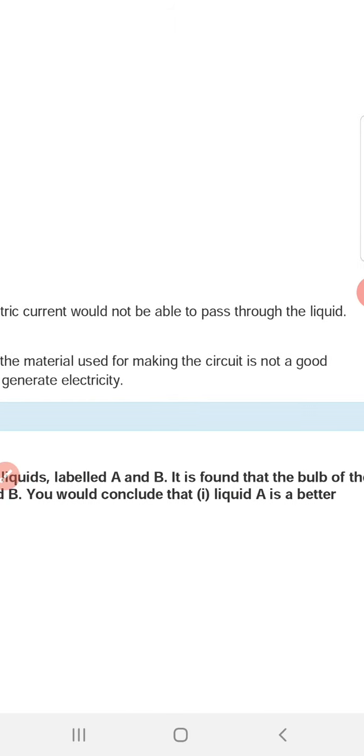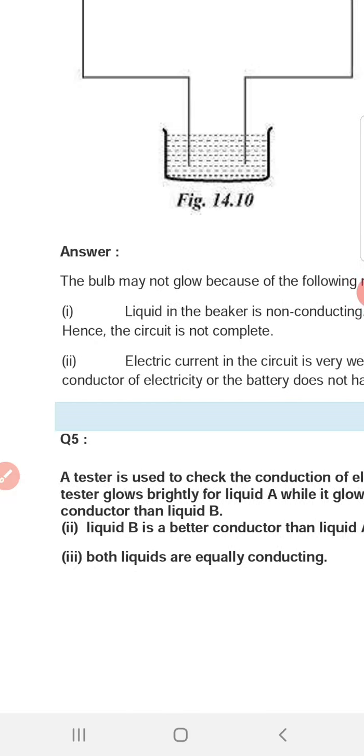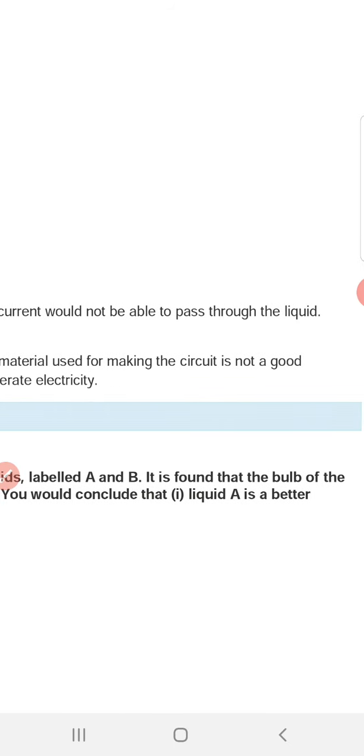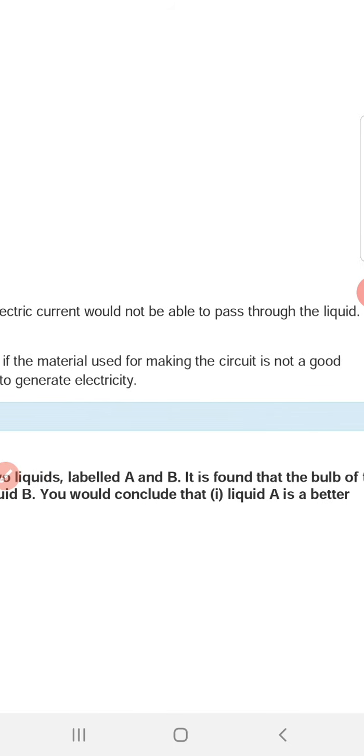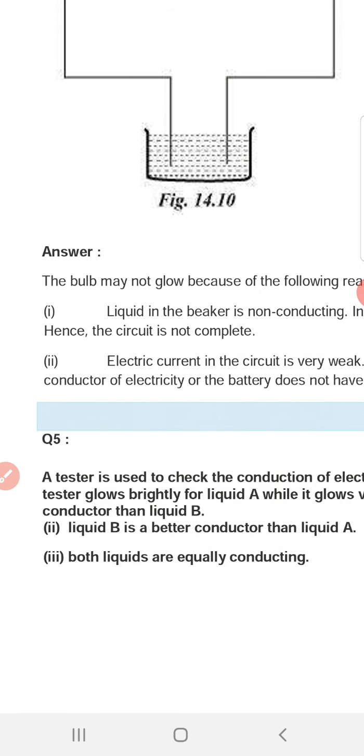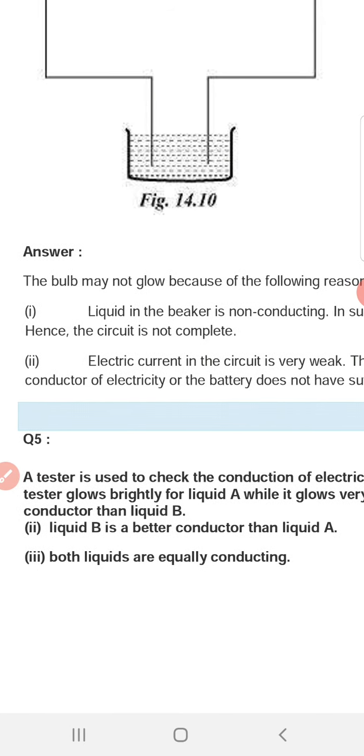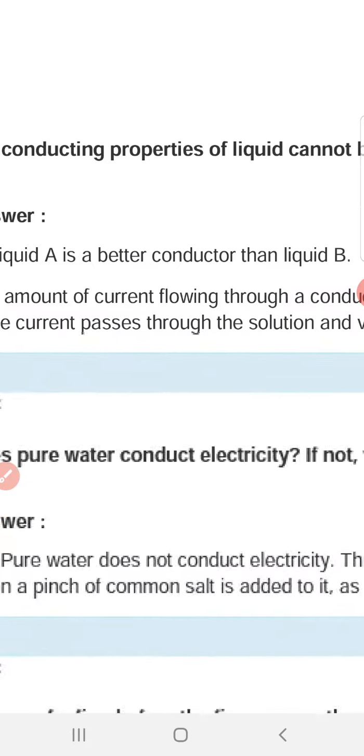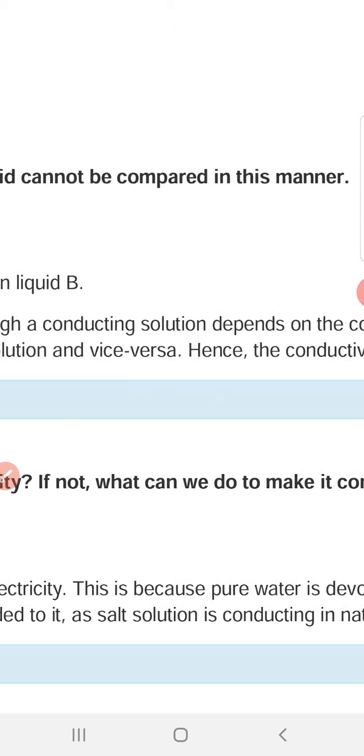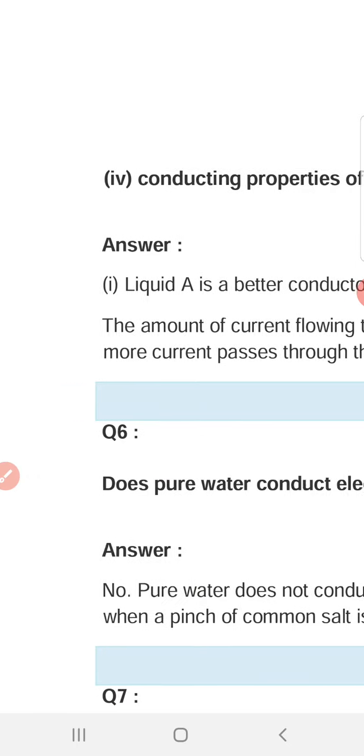You would conclude that: Liquid A is a better conductor than liquid B, or liquid B is a better conductor than liquid A, or both liquids are equally conducting, or the conducting properties of liquids cannot be compared in this manner.